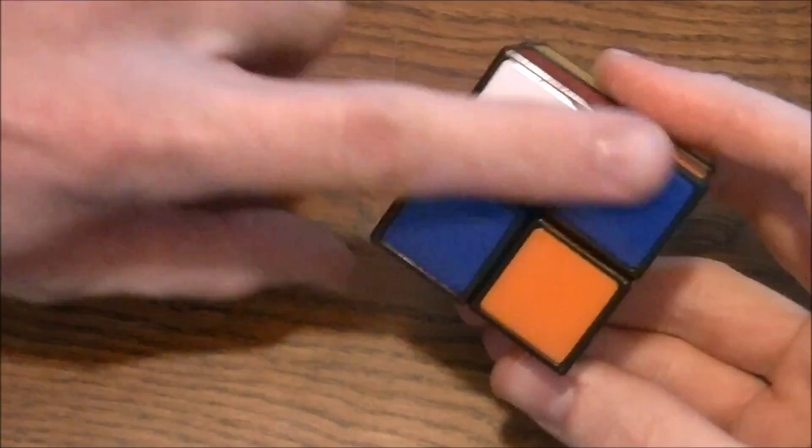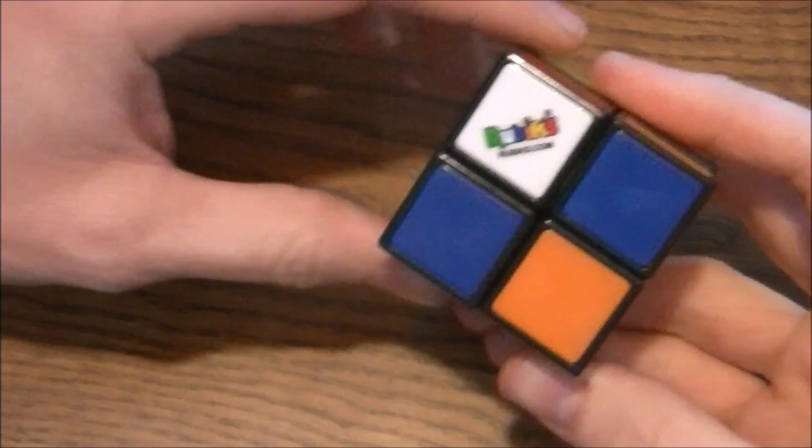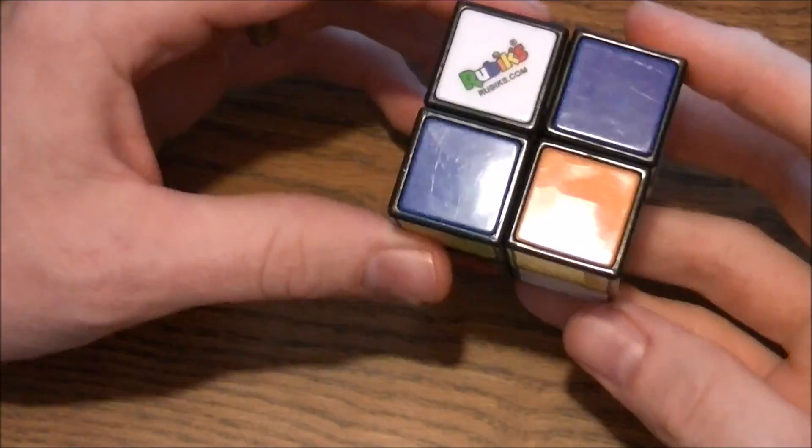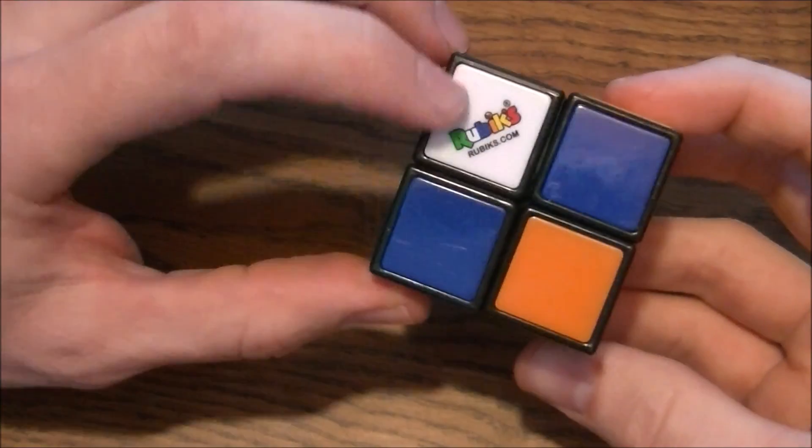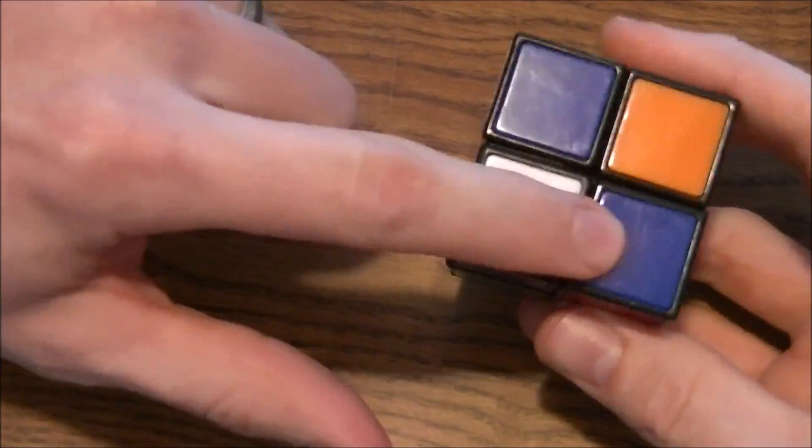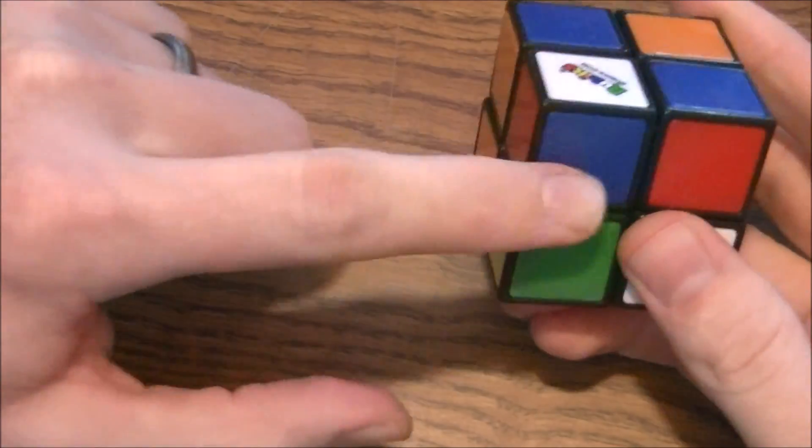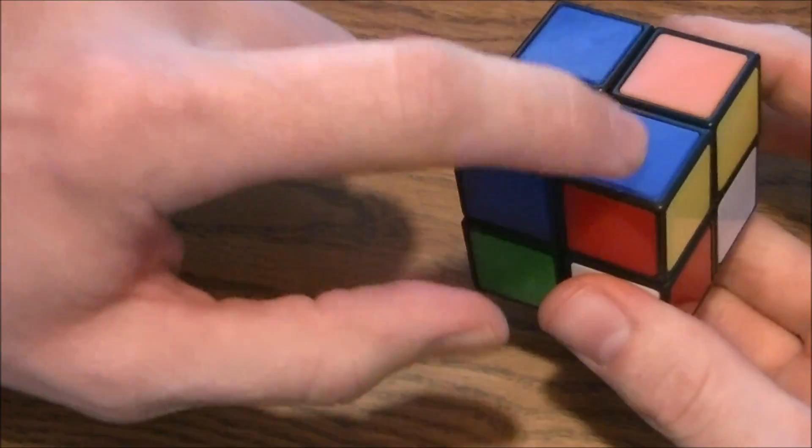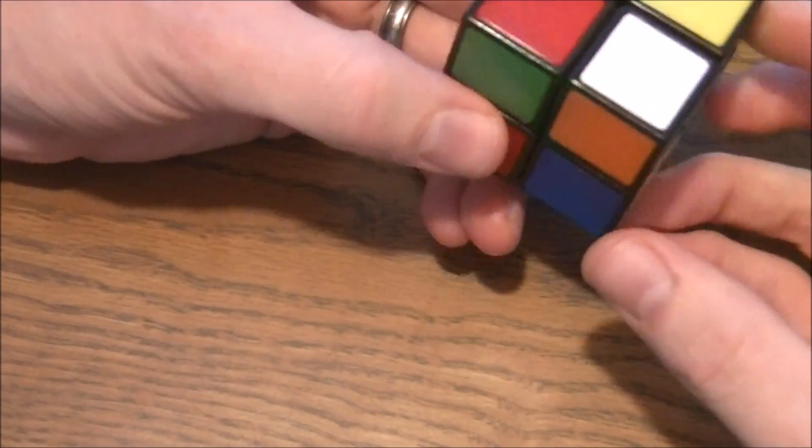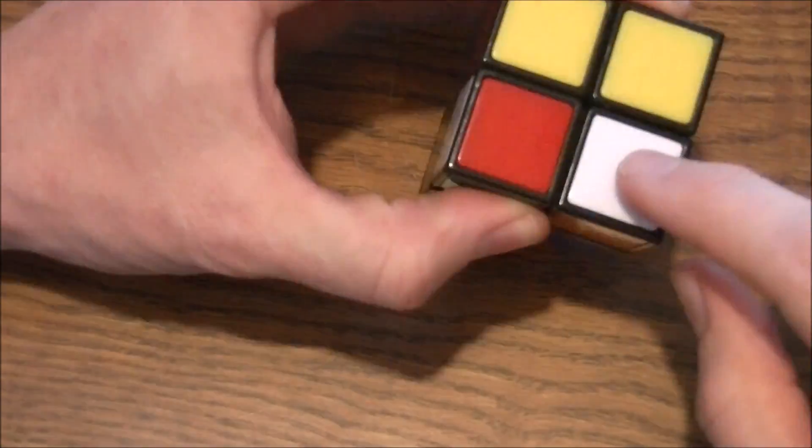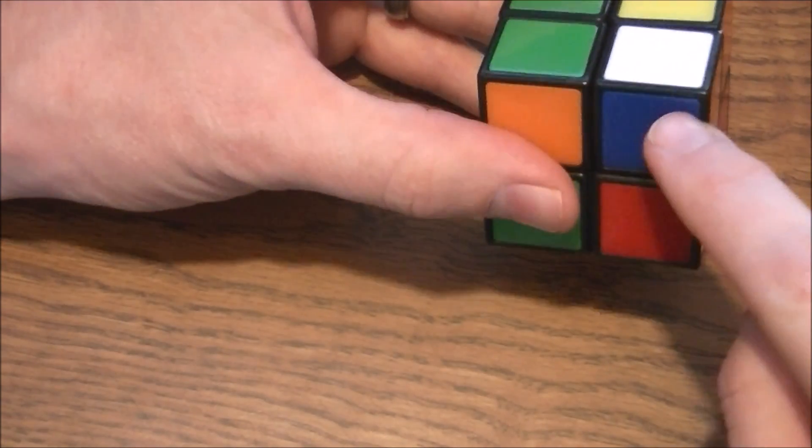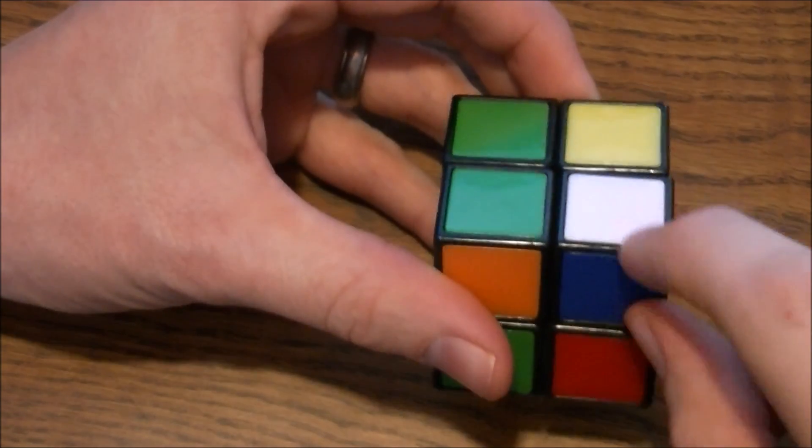So the first step is to get a completely white side. You can pick any color; I'm picking white because it's the one I always start with. When I'm putting the other white pieces here, here, and here, I have to also consider that I want it to be the white piece that also has blue on the side of it. So I'm going to search around and find all the pieces that have white on them, and look for the one that has blue. It's right there. See how that one has white and blue.